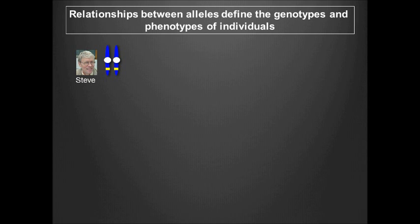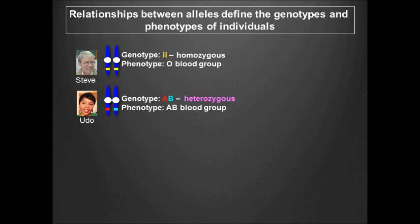Humans, like the fruit flies you will be working with, are diploid organisms, meaning that each individual has two copies of each chromosome. Individuals like myself who carry two copies of the same allele are said to be homozygous for the ABO gene. Individuals like Udo who carry two different alleles are heterozygous.